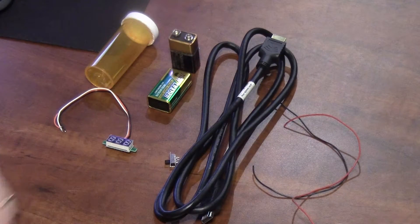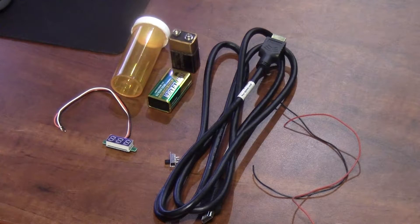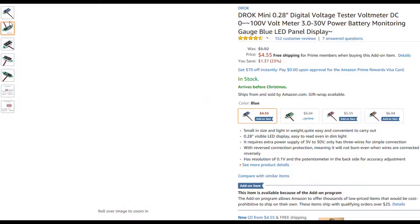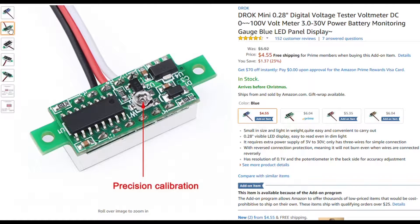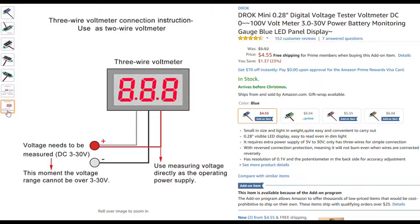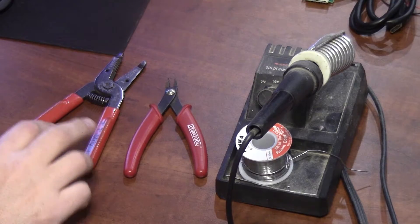This is the voltmeter I bought off Amazon. As you can see, it was about four and a half dollars. We're also going to need some basic hand tools.